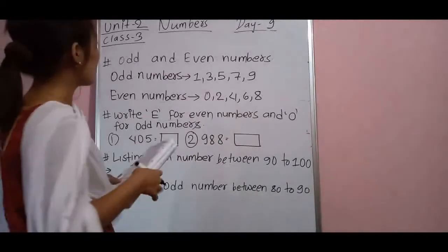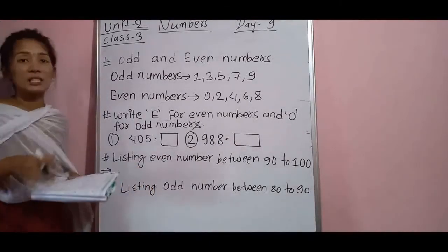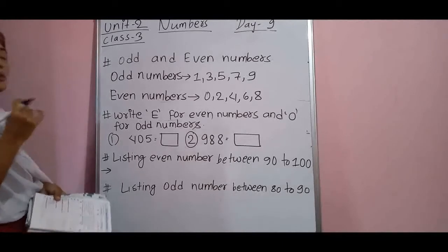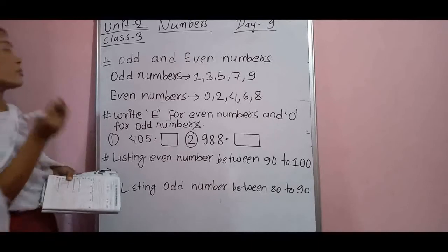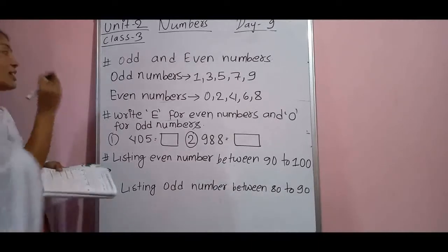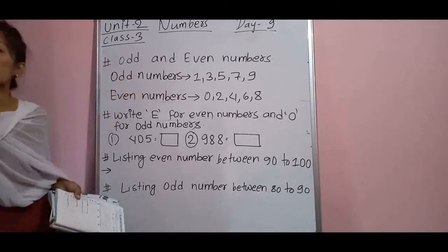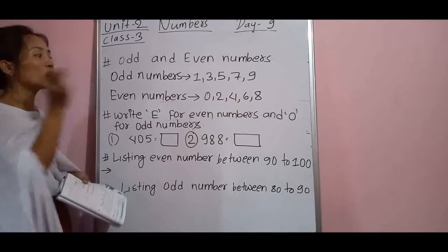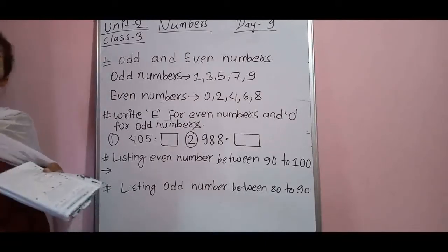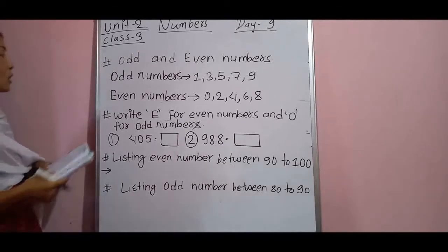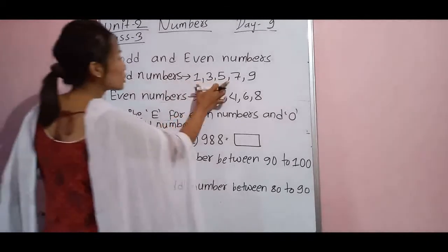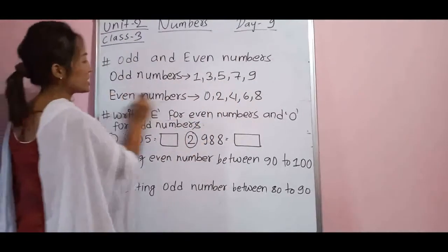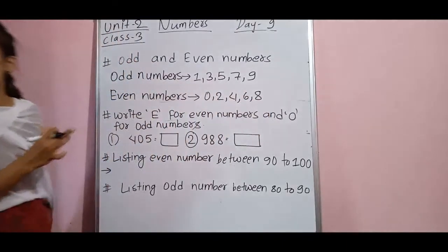Now I am going to the topic of odd and even numbers. What are odd and even numbers? In Nepali, a number whose pair cannot be made is called an odd number. And even numbers means numbers whose pairs can be made — those are called even numbers. All odd numbers are never divisible by 2, but all even numbers are divisible by 2. The five main odd numbers to remember are: 1, 3, 5, 7, 9.